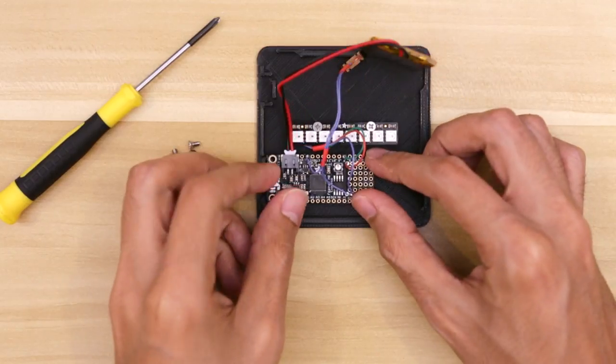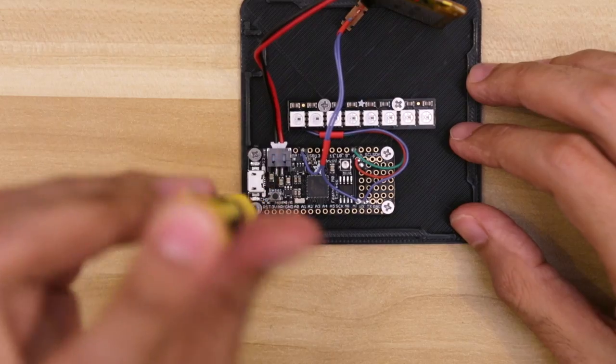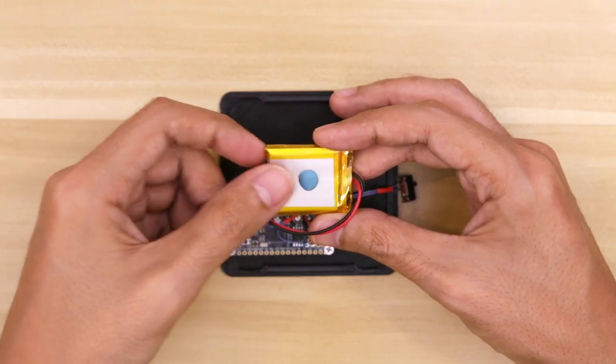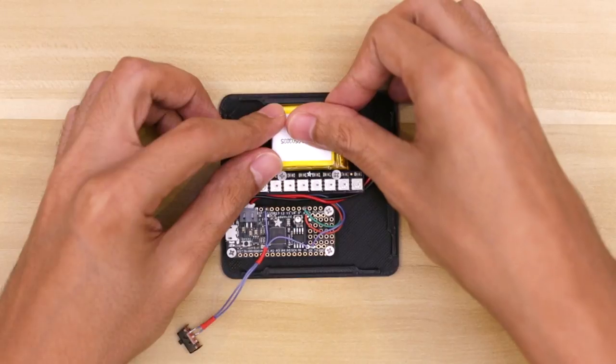We'll do the same for the Adafruit Feather. Position it into place and hold it down while inserting and fastening the four machine screws. I used a piece of mounting tack to secure the battery next to the NeoPixel stick.